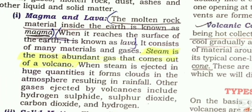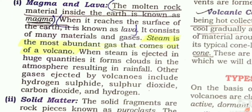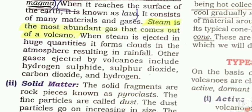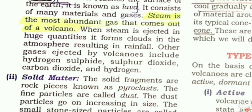The first product is magma and lava. Magma is the molten rock material inside the Earth. When that material comes out and reaches the surface of the Earth, it is known as lava. When steam ejects and comes out to the surface, it forms clouds, which can result in rainfall. When lava cools down, igneous rocks are formed, which we read about in the rock chapter. Other gases include hydrogen sulfide, sulfur dioxide, carbon dioxide, and hydrogen gas.